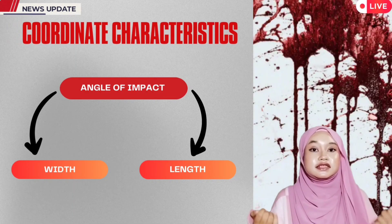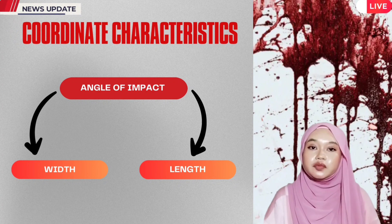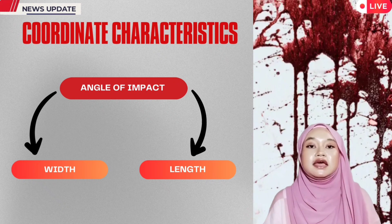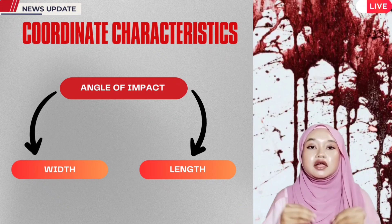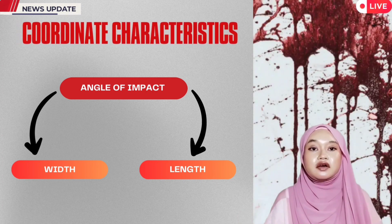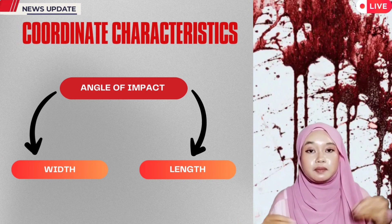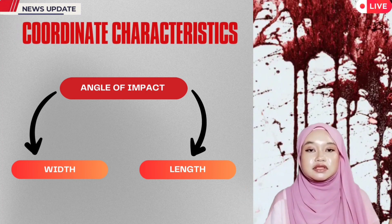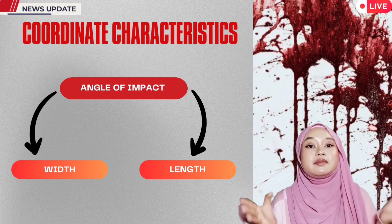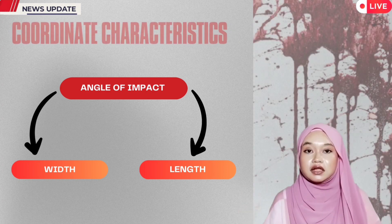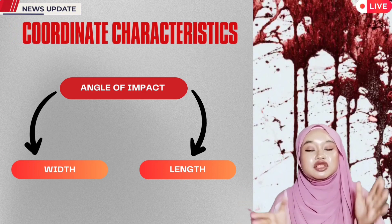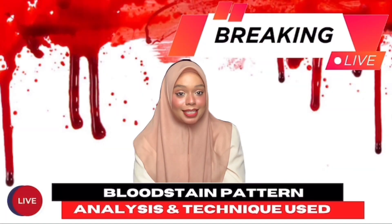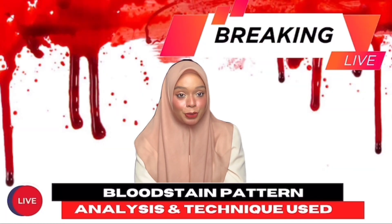The last criteria is the coordinate characteristic of the drip stain impact angle. When a force is applied on a source of liquid blood, an impact pattern is created. The angle of impact is the acute angle formed between the direction of a blood drop and the plane of the surface. After impact, the resulting blood droplets move through the air as a sphere. If a drop hits the surface at an angle, it creates an ellipse, where the length of the bloodstain is the hypotenuse and the width is the opposite side of the angle of impact.